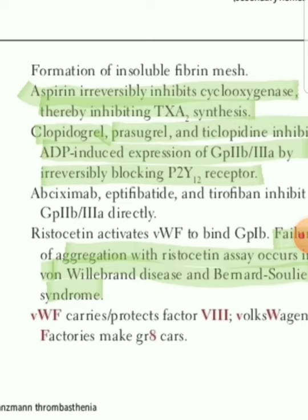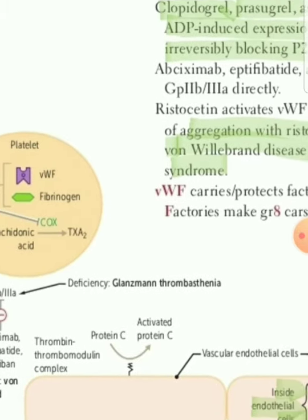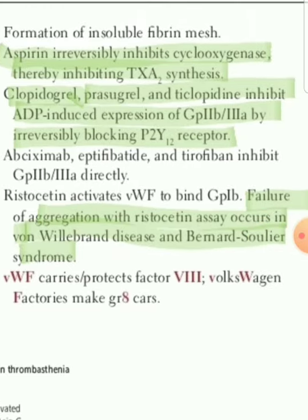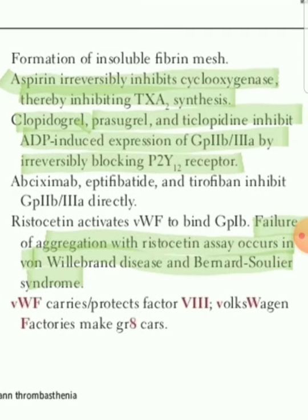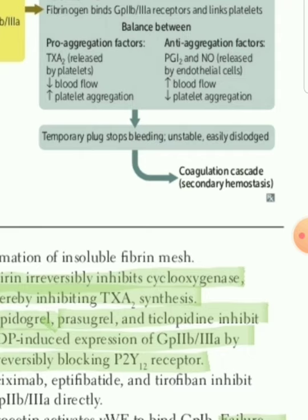Clopidogrel works indirectly via the ADP receptor or P2Y12 receptor. Drugs that directly inhibit 2b3a include abciximab and tirofiban. If 2b3a is absent, the disease is Glanzmann's thrombasthenia. So in summary: GP2b3a helps in aggregation between platelets, GP1b helps in adhesion to the endothelium. Thromboxane A2 is a pro-aggregant factor, and aspirin works to decrease its synthesis.